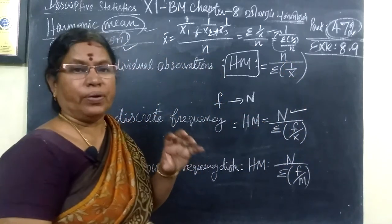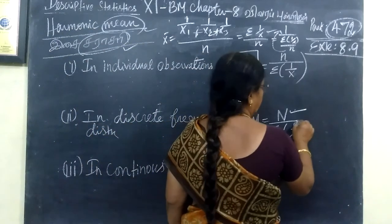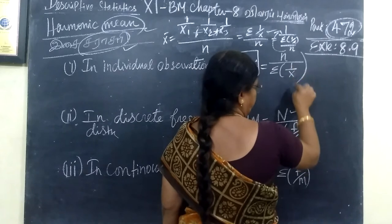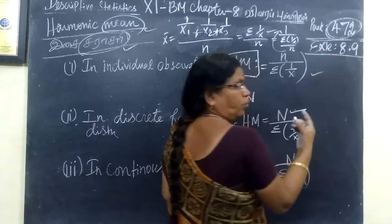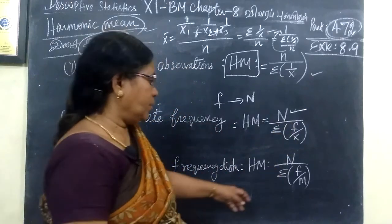But for grouped data frequency, you are using capital N. Now f by x. Here is 1 by x. Here is f. Here is f by x. Here is continuous.